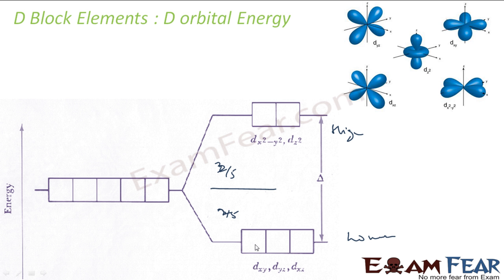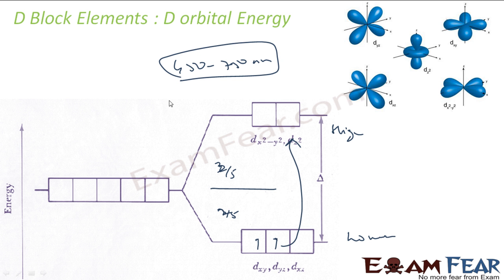Now, if the d orbital electrons are unpaired — for example, if there are only two electrons — these electrons keep jumping from the lower energy d orbitals to the higher ones. Since they jump and there is a difference in energy, when they come back or when they jump, they either absorb light or emit light. This light or ray is in the visible spectrum of 400 to 750 nanometers. They take some energy from sunlight or any light; that particular energy is absorbed and the remaining is transmitted back, and we can see that color with our eyes.